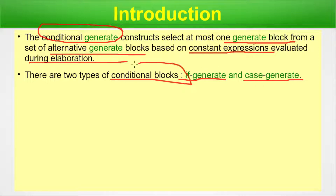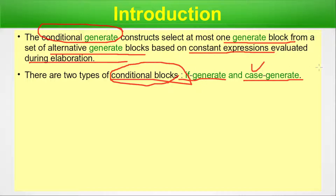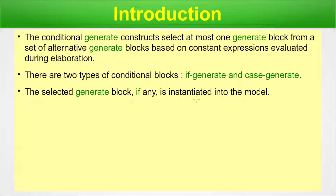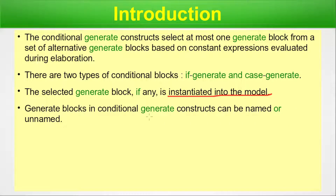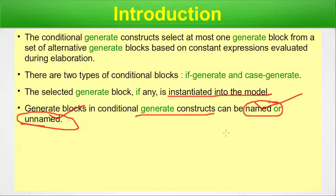These two types of conditional blocks can be used within the generate block. Generally people use them either for straightforward code or for complex state machines, where they use case or a combination of if and case depending on how complex the machine operates. Generate blocks in conditional generate constructs can be named or unnamed — today's examples will show both.